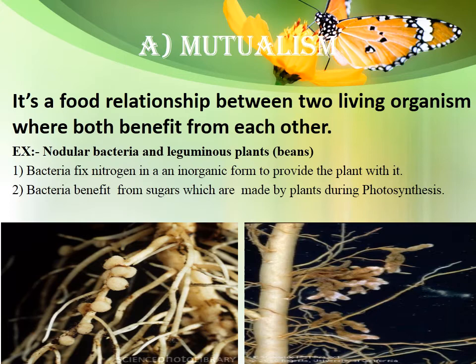Mutualism is a food relationship between two living organisms where they both get benefit from each other. For example, the nodular bacteria and the leguminous plant: the bacteria fix nitrogen for the plant, while the plant gives sugar to the bacteria. They both benefit — this is called mutualism.